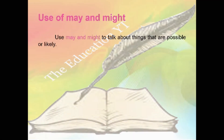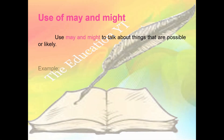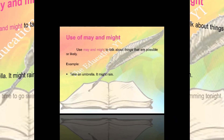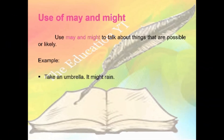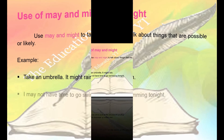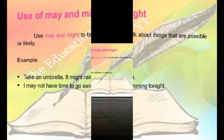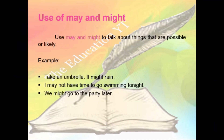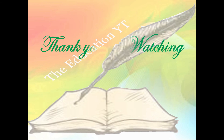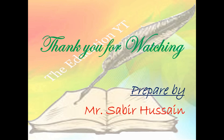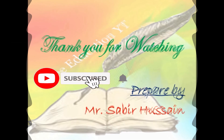Use may and might to talk about things that are possible or likely. Examples: Take an umbrella in case it rains. I may not have time to go swimming tonight. We might go to the party later. If you are not careful, you may hurt yourself.